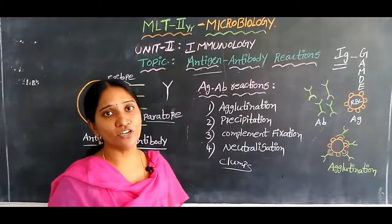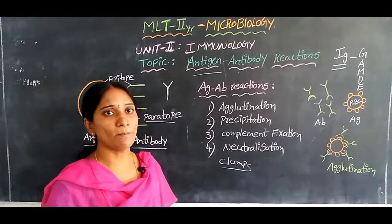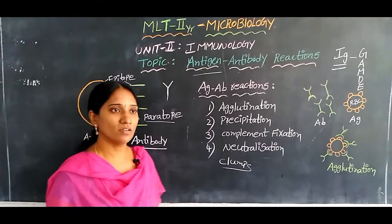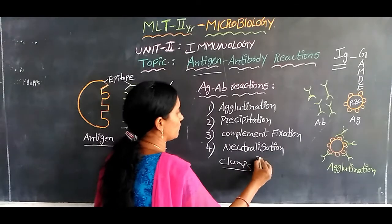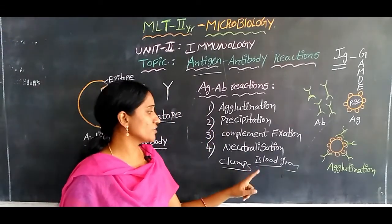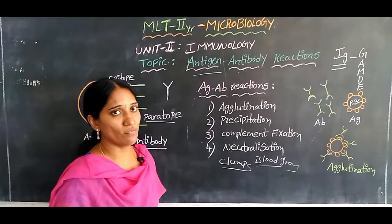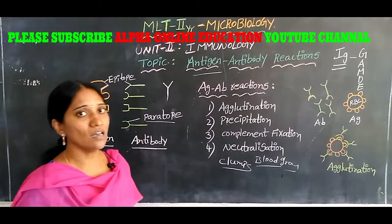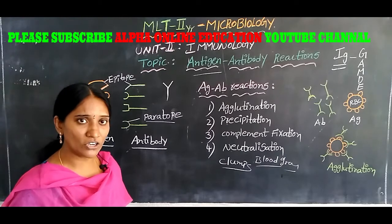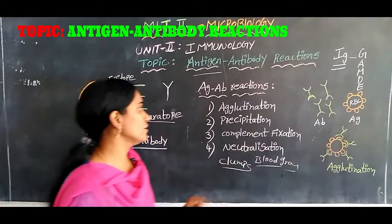In agglutination, the antigens are known as agglutinogen and the antibodies are known as agglutinin. Agglutinogen combines with agglutinin to form agglutination — that is, the forming of clumps. Agglutination is used in blood grouping (ABO and Rh blood group typing), the Coombs test, and the Widal test for typhoid.